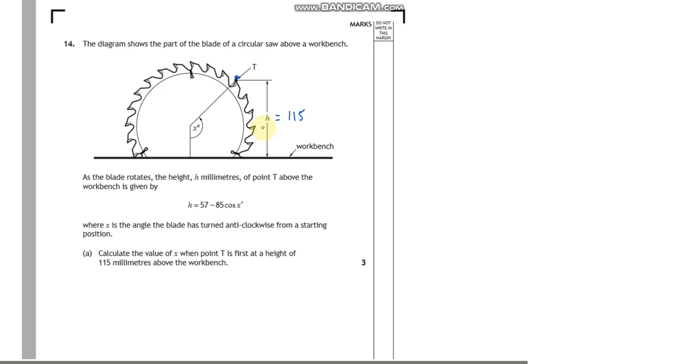Now, this is rotating. Looks like it's rotating. That angle there to me suggests it's going that way. Although the actual blade to me would look like it's going that way. But anyway, for angle x is the angle the blade has turned anticlockwise from a starting position. So it's that angle distance we're measuring there. So when the height is 115, can you calculate the angle? There's our equation. So all we've been asked to do is substitute in 115 into that equation and solve.